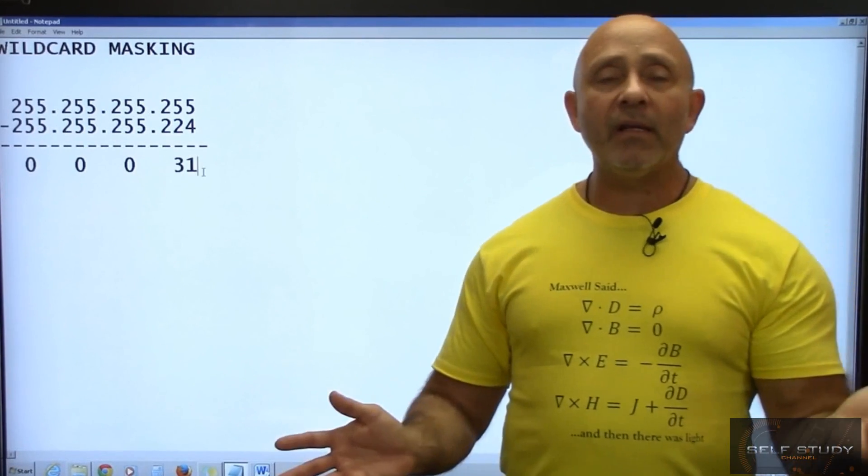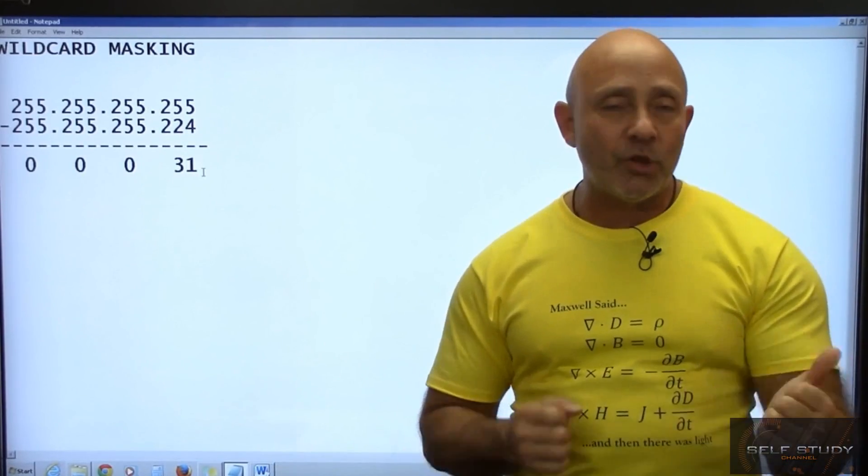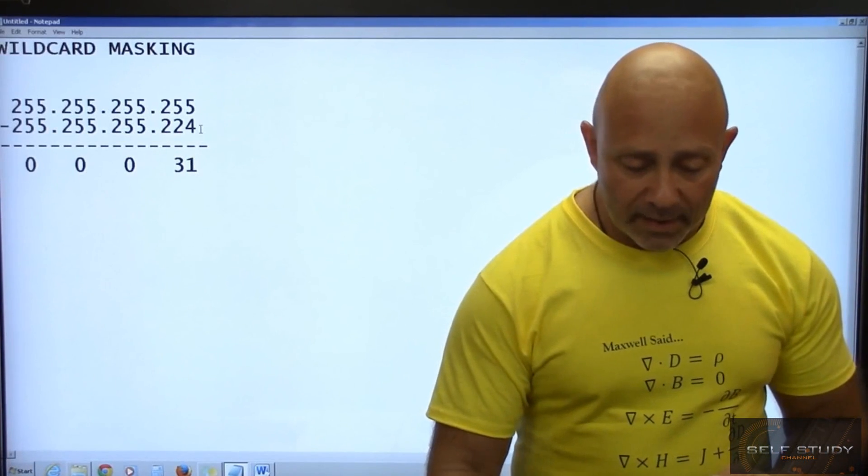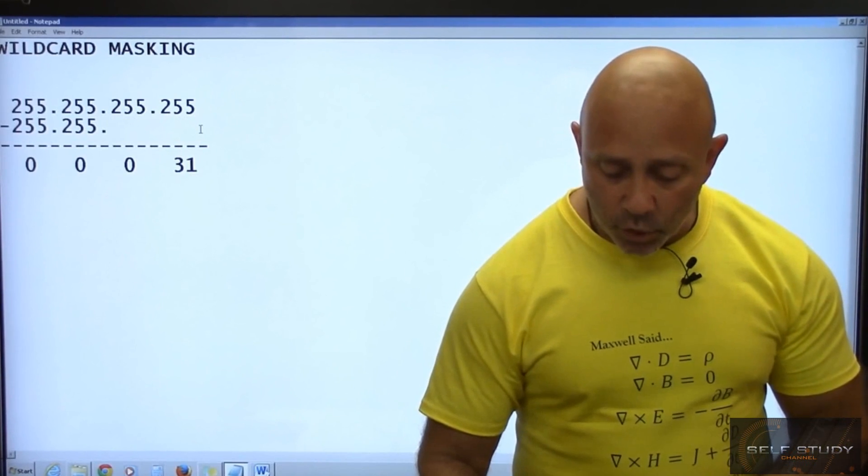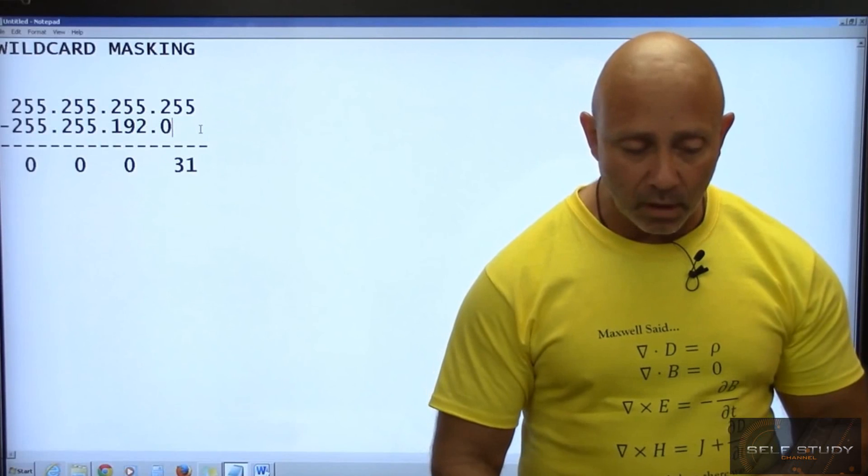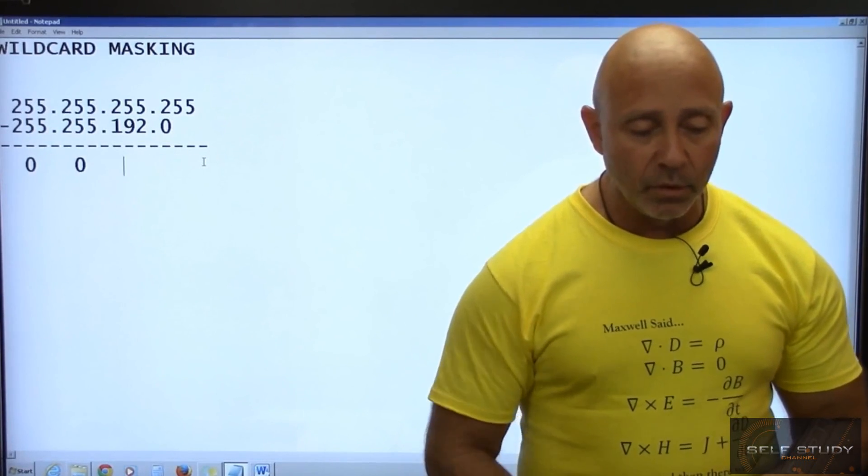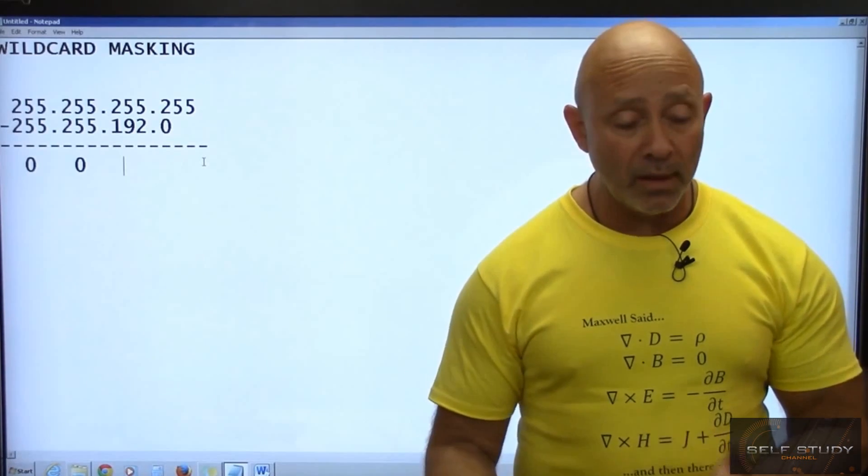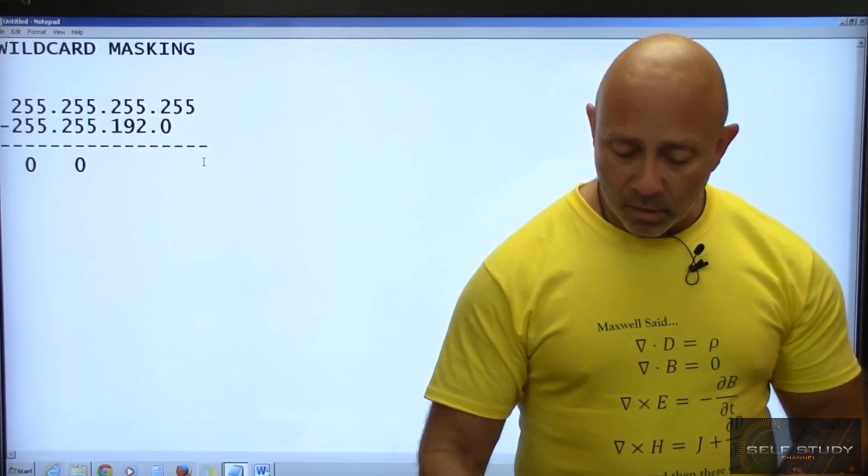Very simple right, we're in the last octet. Let's move it around, let's change it up a bit. Let's go to the third octet, let's get dangerous. Let's do a 192 subnet mask. What is the increment there? 64. One less 63. If you subtract there that's what you get, 63.